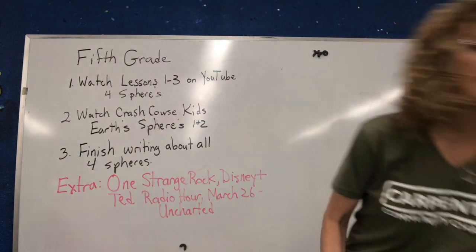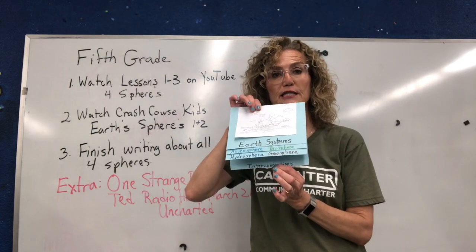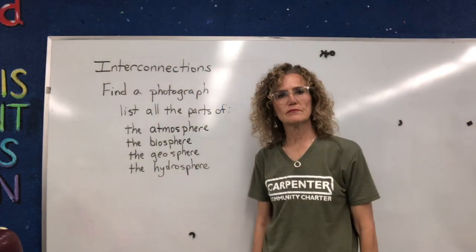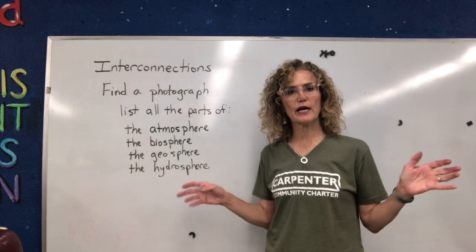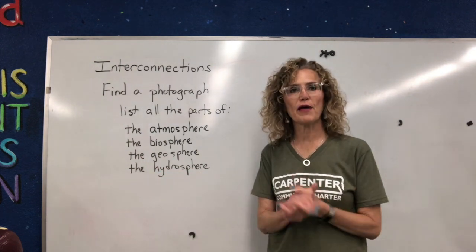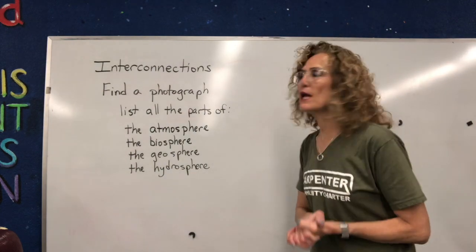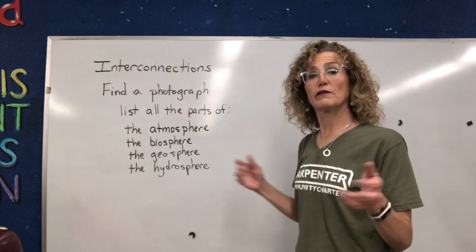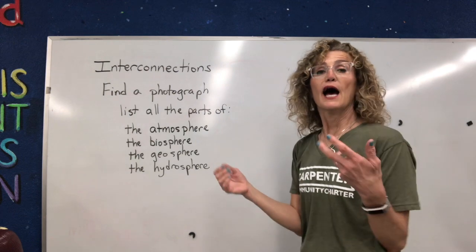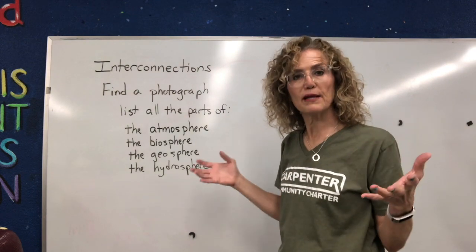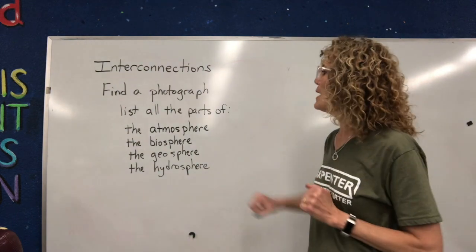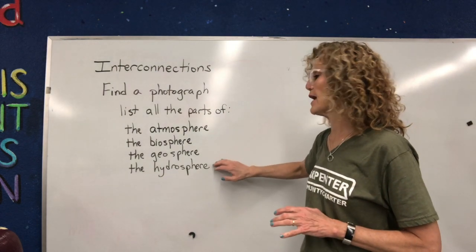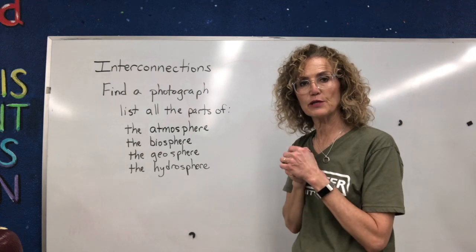Now we're going to turn our attention to the interconnections section. When you get to the interconnections section of the package, you're going to find a photograph — find one online or cut one out from a magazine. I want you to get a real photograph of something from life. Then you're going to list all the parts — the atmosphere, biosphere, geosphere, and hydrosphere — and how they interconnect and relate to each other.